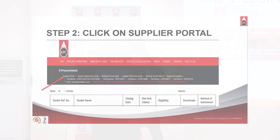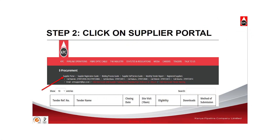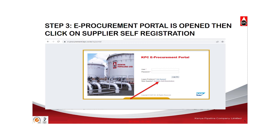Immediately you select the tenders tab, a page will open up for e-procurement. Go to the e-procurement page and select supplier portal. An e-procurement page will open up with our supplier portal.